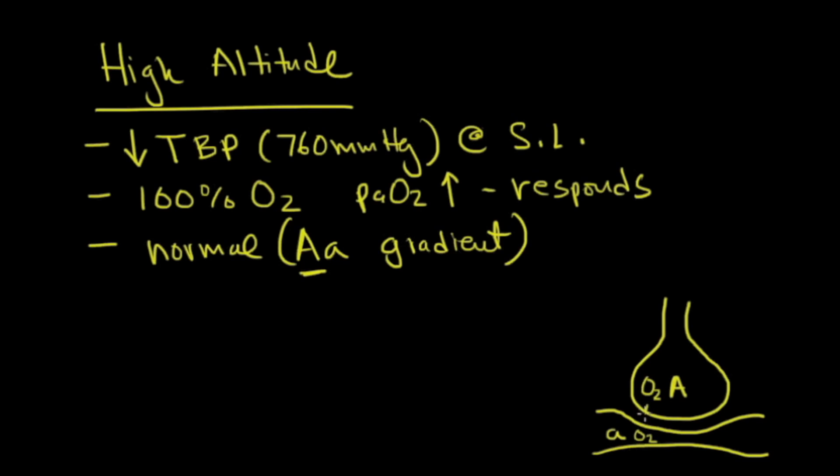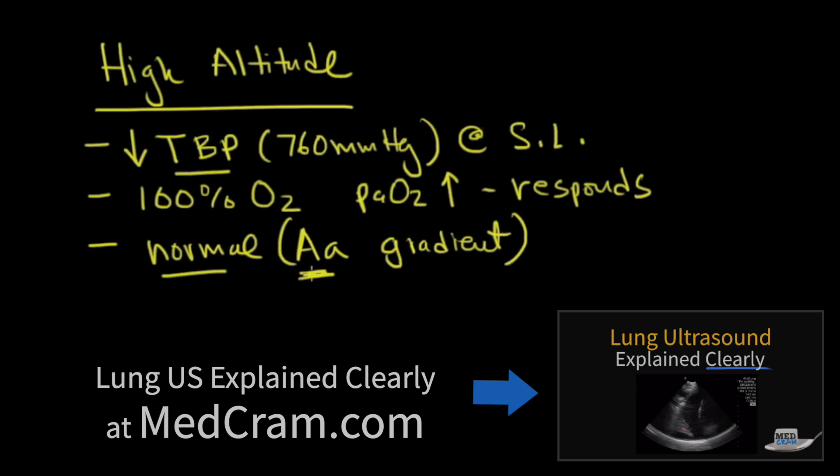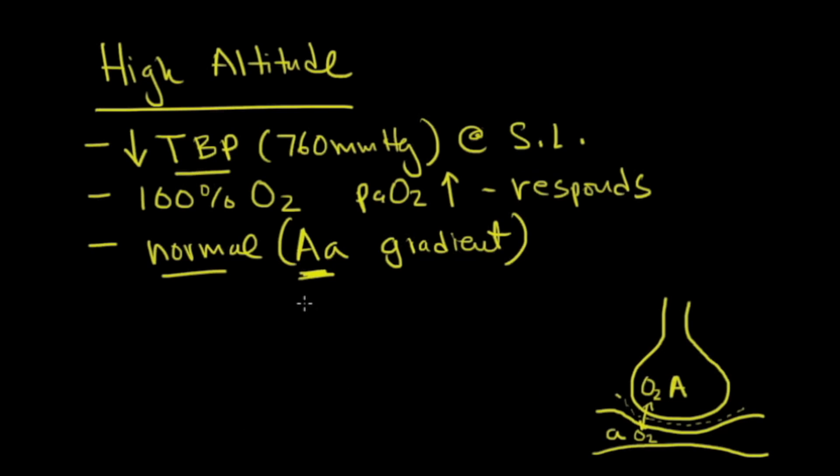And so if there is a big difference between these two, that must mean because there's something going on here or there's a barrier or there's something that's preventing this oxygen from fully oxygenating the capillary. In this case, there isn't. It's simply a result of a low barometric pressure and as a result of that, the AA gradient is normal.